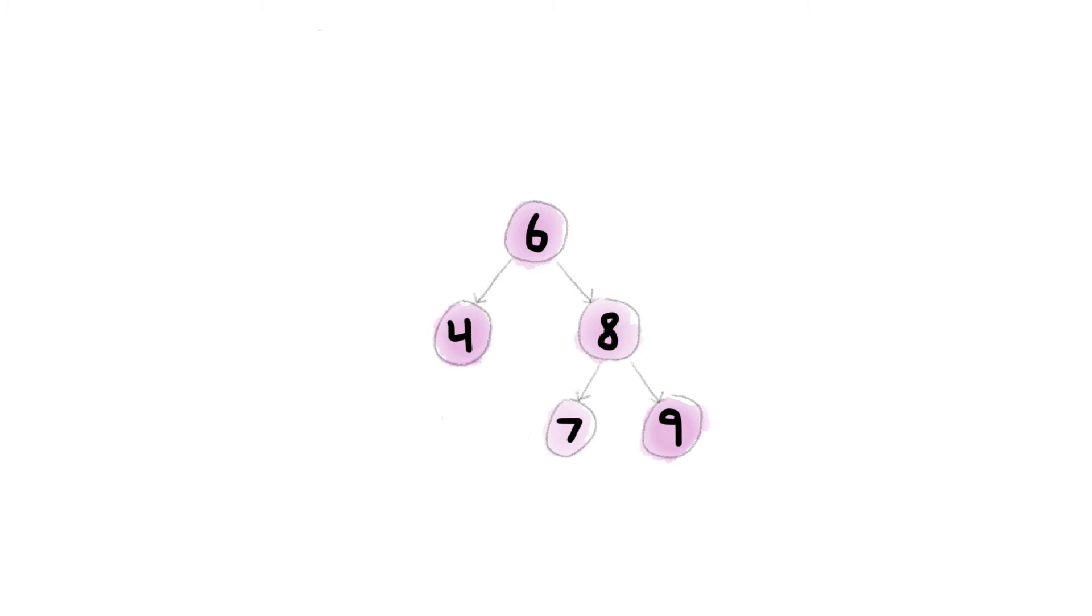It only gets complicated when the deleted item has both right and left children. As before, we remove the item, but then what? If you move the eight into the top position, seven would be to the right of eight,